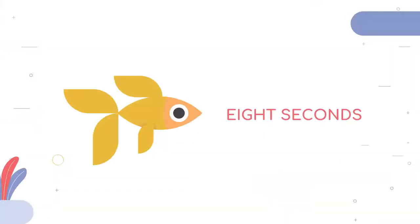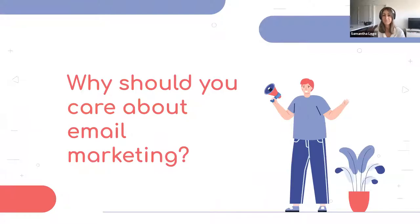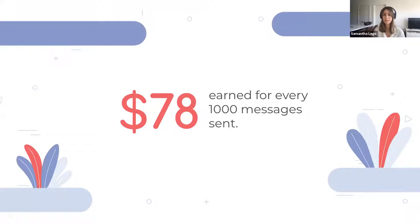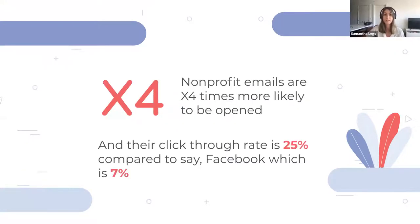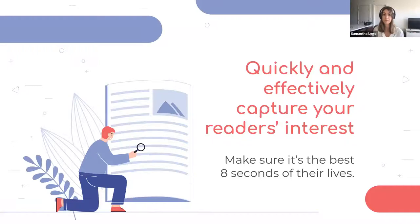Eight seconds — that's the average amount of time you have to capture your adult reader's attention, comparable to the attention span of a goldfish. Your email did not take you eight seconds to create; it probably took closer to eight hours. Why go through all that trouble? Because email marketing generates the best return on investment for your marketing dollars — around $78 earned for every 1,000 messages sent according to M&R Benchmarks. Nonprofit emails are four times more likely to be opened, and their click-through rate is 25% compared to about 7% for a Facebook post.